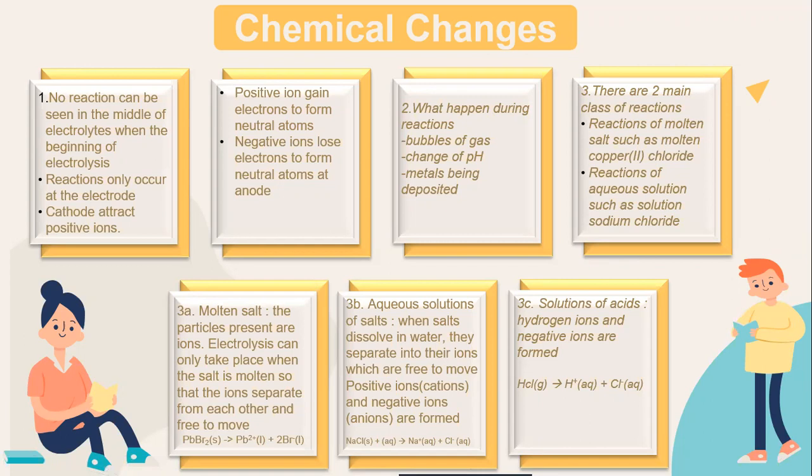Molten salt: the particles present are ions. Electrolysis can only take place when the salt is molten, so that the ions separate from each other and are free to move. The example given is PbBr₂ in solid form. During electrolysis: Pb²⁺ (liquid) + 2Br⁻ (liquid) are the ions formed.